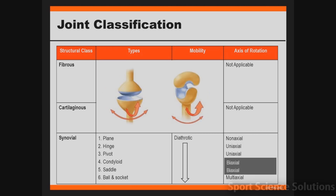The next type of axis of rotation is called a biaxial joint, which refers to rotating on two axes. The examples are both condyloid and saddle joints. In both of these examples, the joints are able to flex and extend, and also able to abduct and adduct — or a combination of these movements called circumduction — but they are not able to rotate.